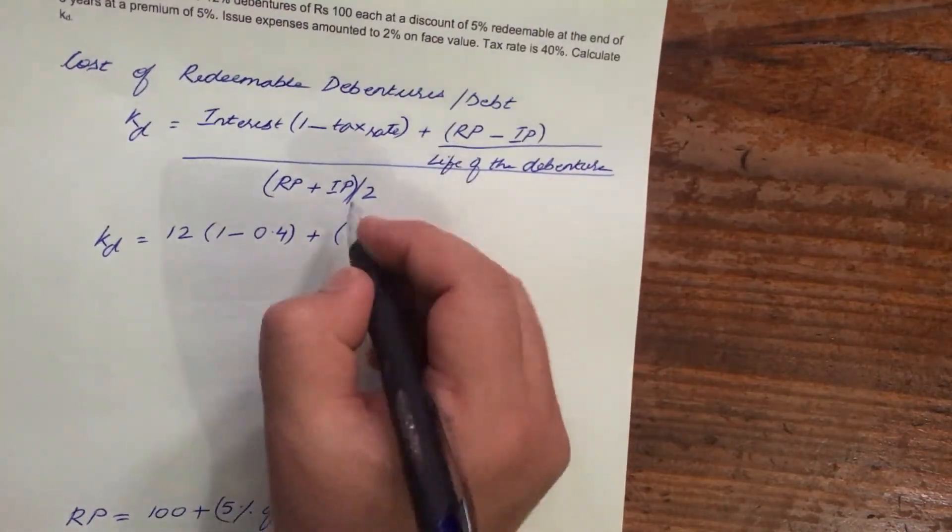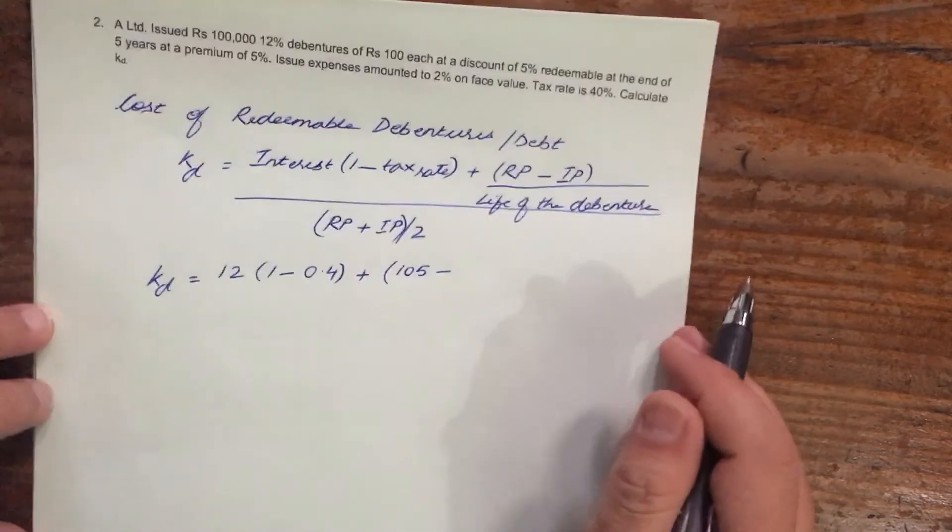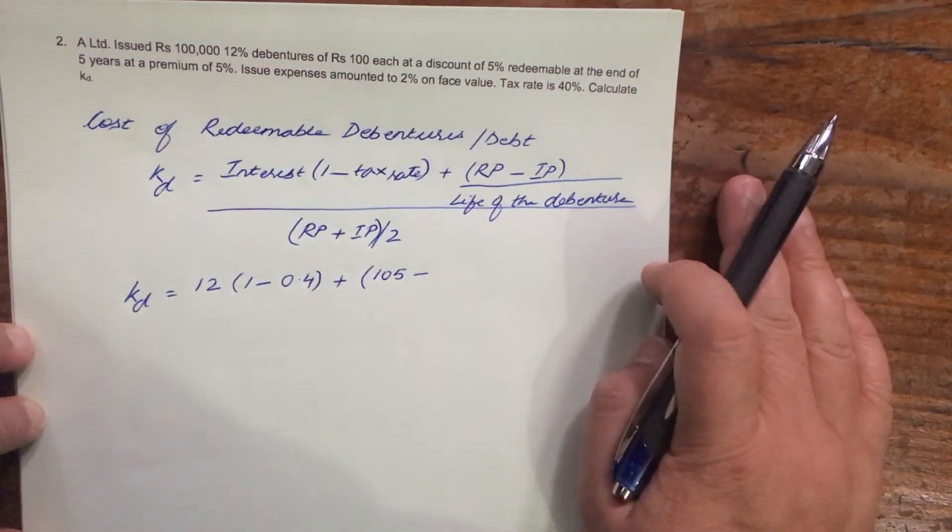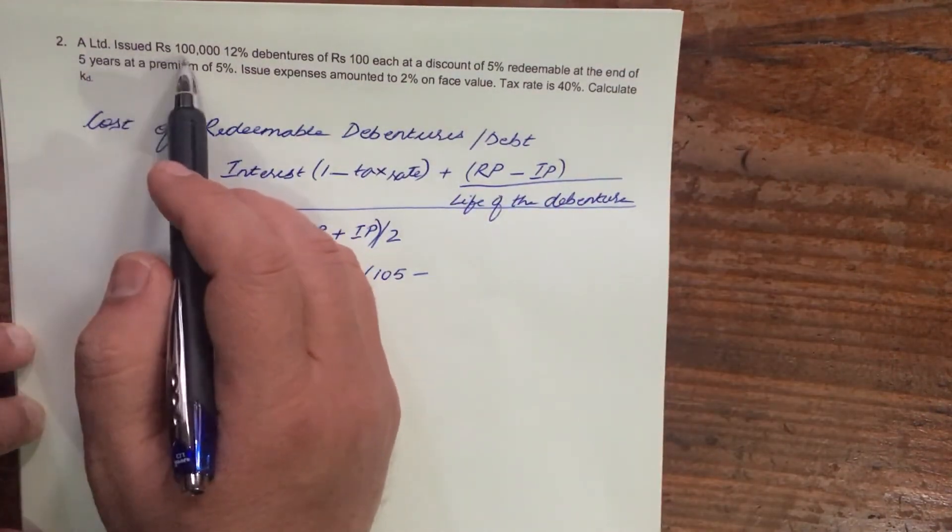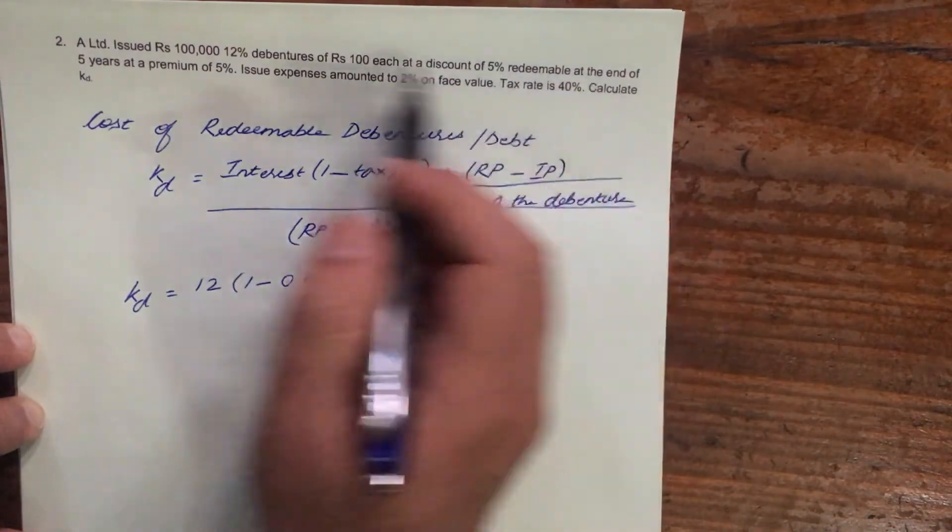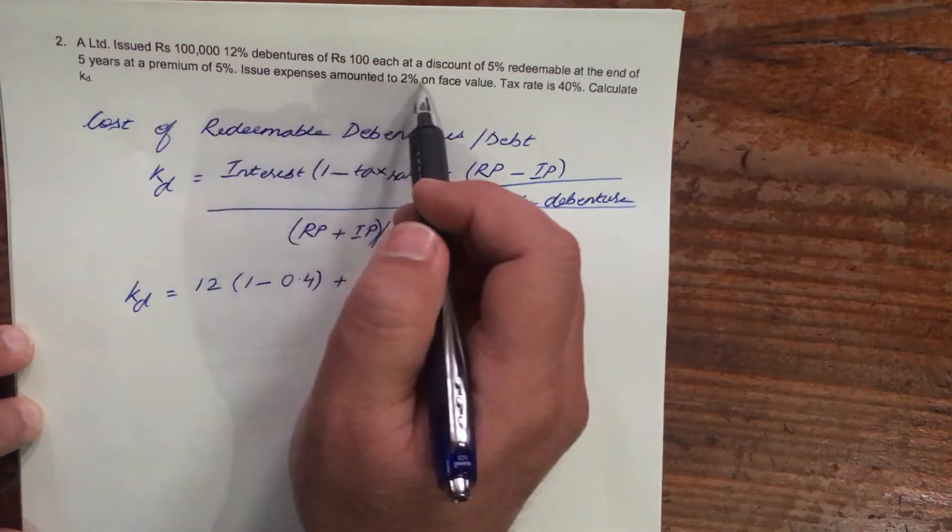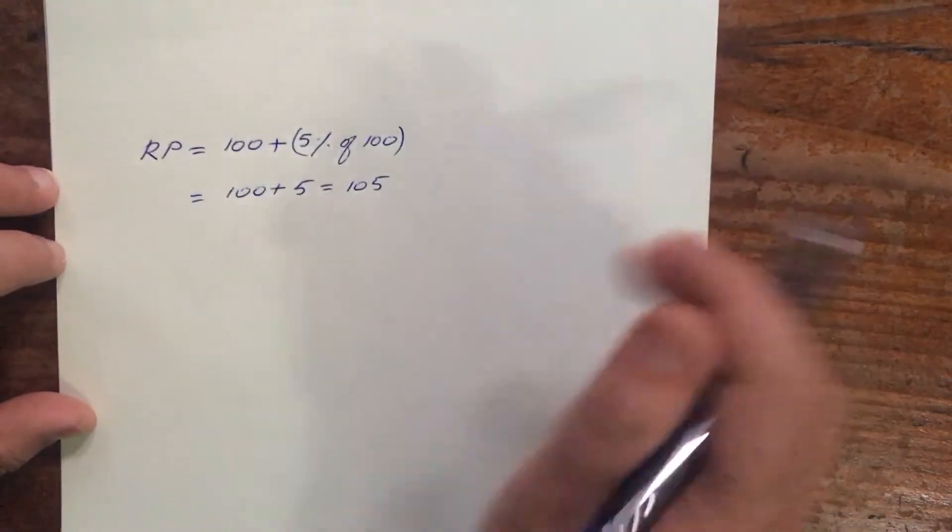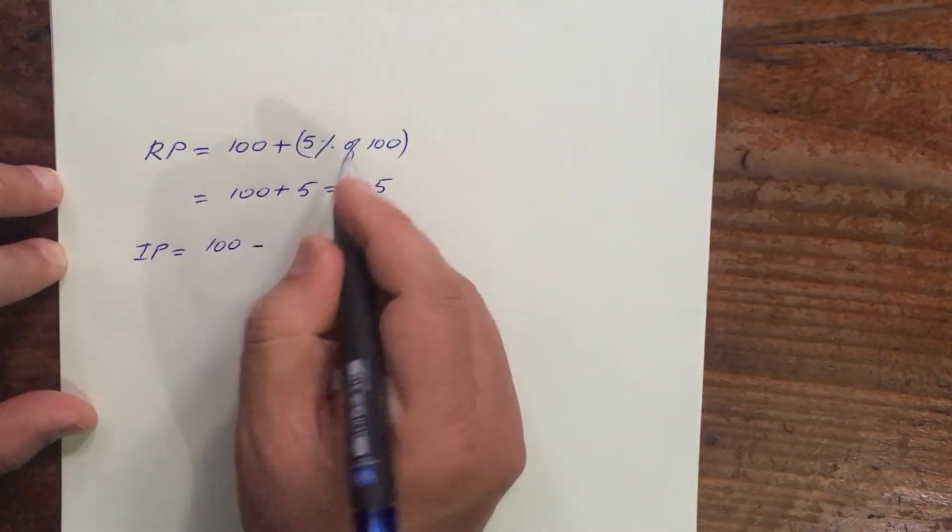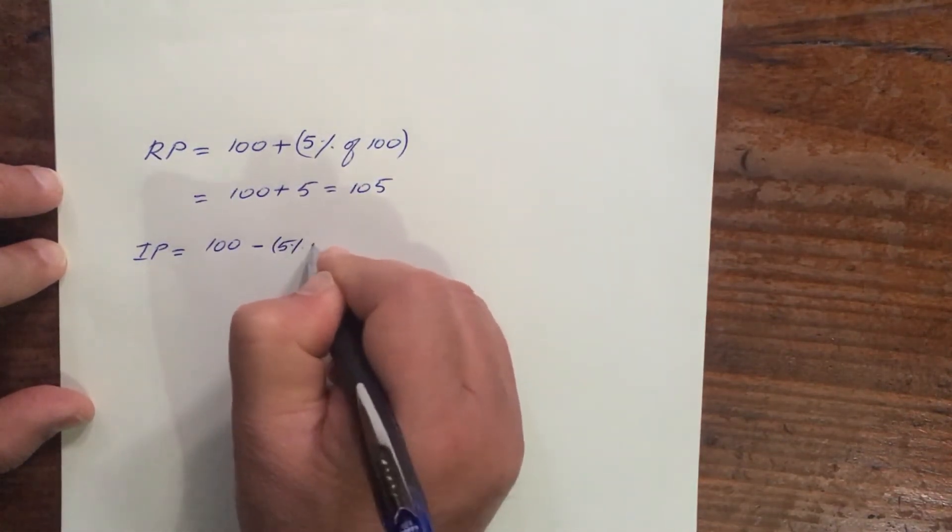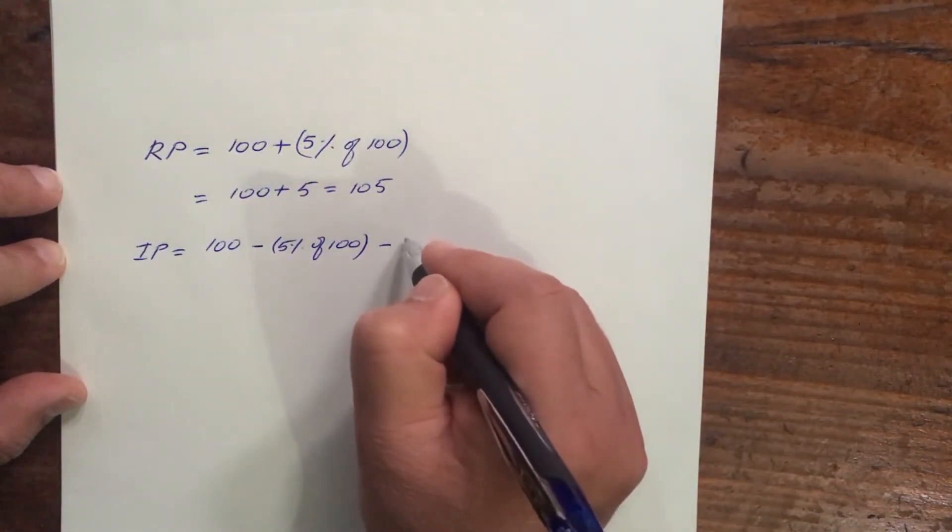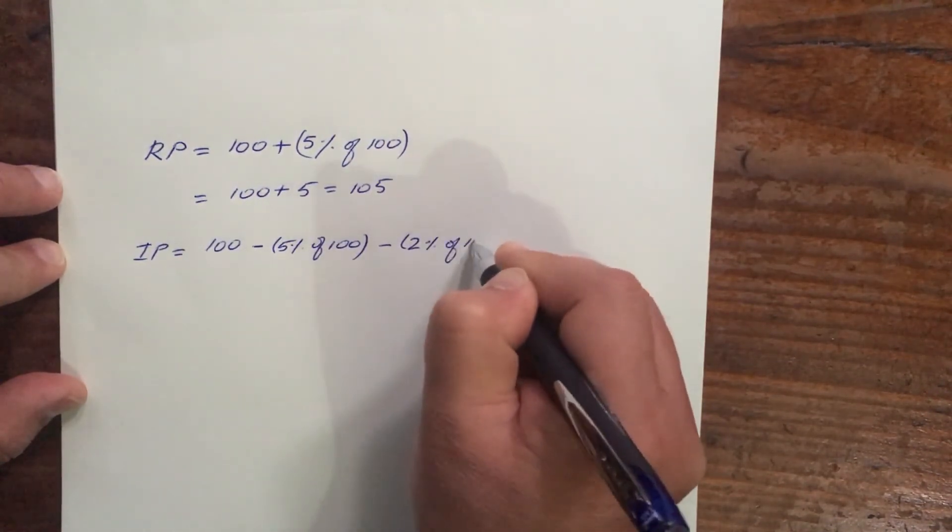So your redemption price Rp is 105 minus your issue price. Now what is your net issue price? Issue expenses amounted to 2% on face value. So that means it says here that A limited issued 1 lakh 12% debentures of rupees 100 each at a discount of 5%, redeemable at the end of 5 years at a premium of 5%. Issue expenses amounted to 2% on face value. So already you know, so your IP net issue price will be 100 minus, since it is going to be issued at 5% discount, so 5% of 100, and then again there is issue expenses which amounts to 2% on face value minus 2% of face value.